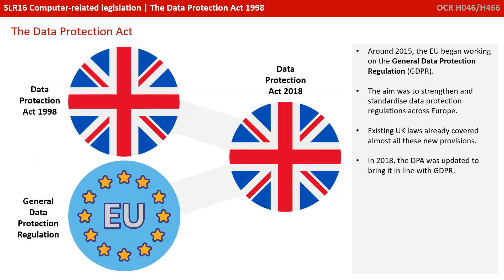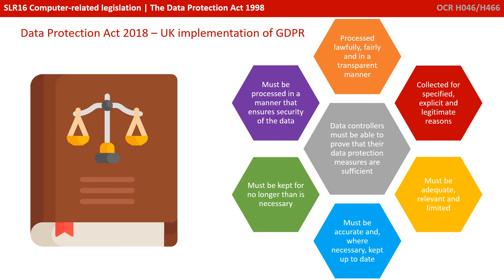Around 2015, the European Union began working on the General Data Protection Regulation (GDPR). The aim was to strengthen and standardise data protection regulations across Europe. Existing UK laws already covered almost all these new provisions, and in 2018 the DPA was updated to bring it in line with GDPR. The GDPR principles look fairly similar: data must be processed lawfully, fairly and transparently; collected for specified reasons; must be adequate, relevant and limited; accurate and kept up to date; not kept longer than necessary; and processed securely. One major new addition was that data controllers must be able to prove their data protection measures are sufficient to protect your data.